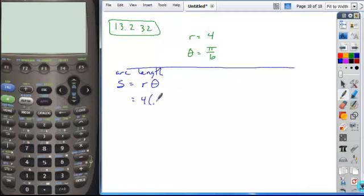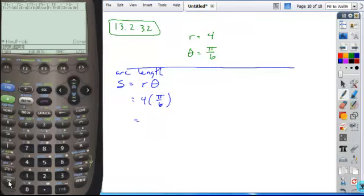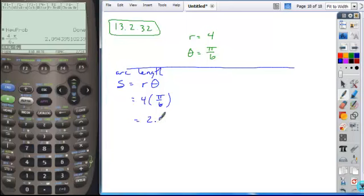So for this first one, if we just plug in a 4 and then a pi over 6, that's going to give us our value. It does ask us to round it, so we can plug this in: 4 times pi divided by 6, put it in decimal form, and you get about 2.09 for your arc length.